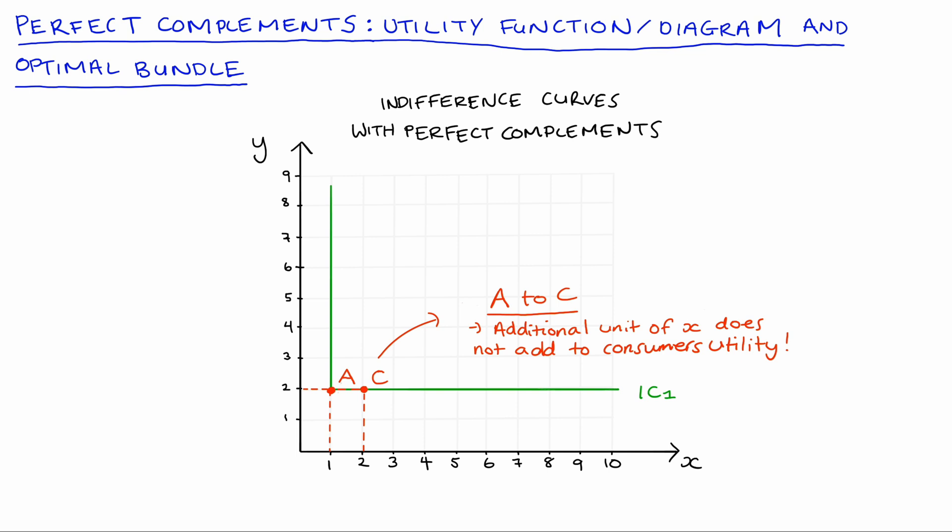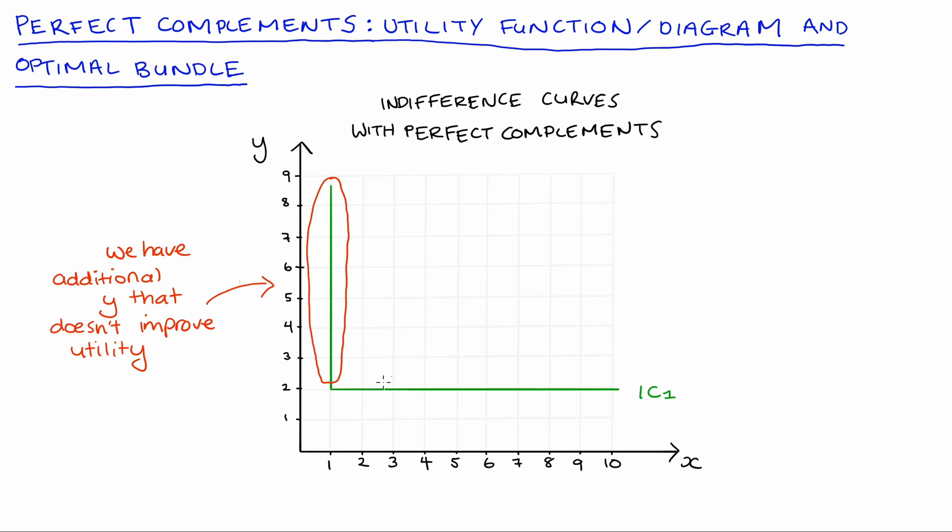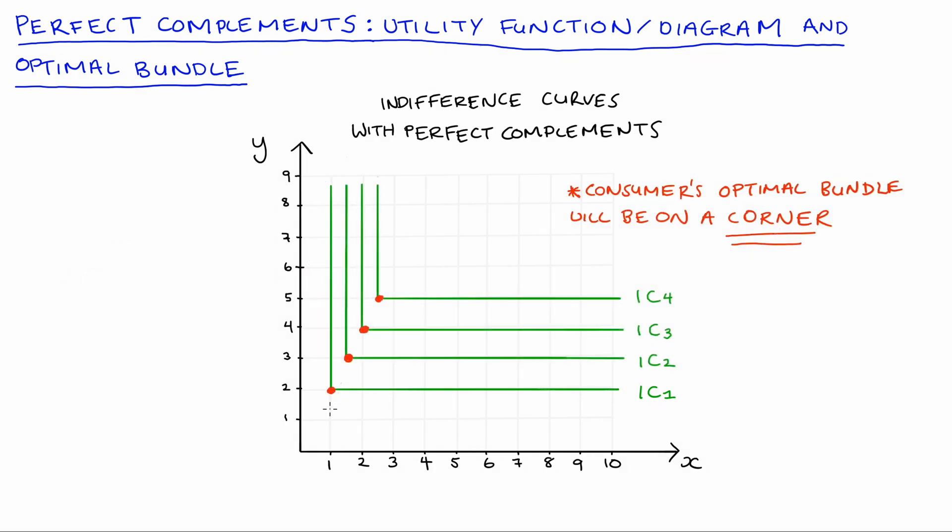And so then hopefully you can see that reading our indifference curves, the straight lines coming out from the corner of our L shapes kind of represent these levels of consumption where we have an additional or extra y or extra x that has not improved our consumer's utility. And hopefully you can also appreciate that our consumer will be making their choice with a limited budget and so our optimal point of consumption will be where our consumer is definitely not spending any money on x or y that doesn't improve their utility. That would be a waste. So it follows that our optimal bundle will not be on any of the straight sections of our indifference curves, it will be on one of the corners, one of the red points that I have here.